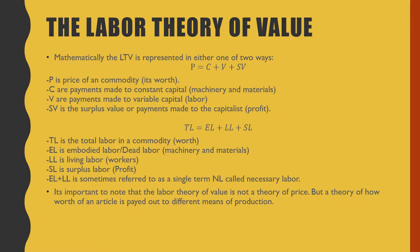The second way is TL = EL + LL + SL. This shows how a product is made up of complete labor, where TL is the total labor in a commodity, which is its worth. EL is the embodied labor or dead labor, which is the machinery and materials used to produce that product. LL is the living labor, which makes reference to the workers. SL is the surplus value, which again is profits. EL plus LL is sometimes referred to as a single term called NL, which is necessary labor.